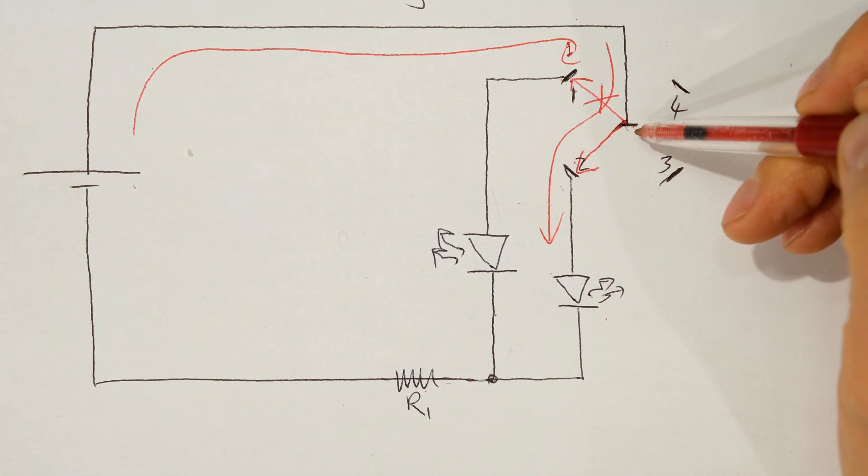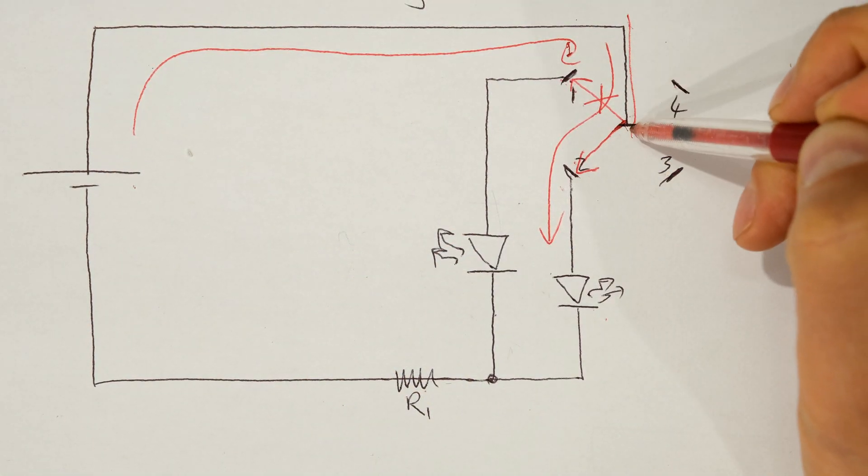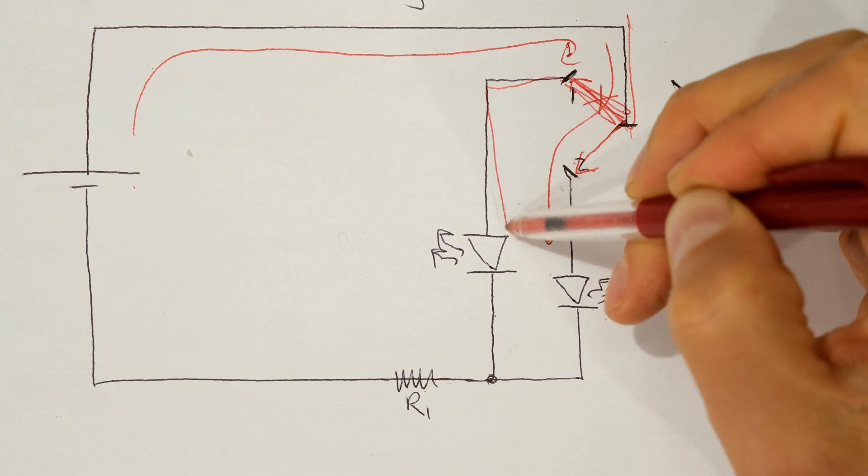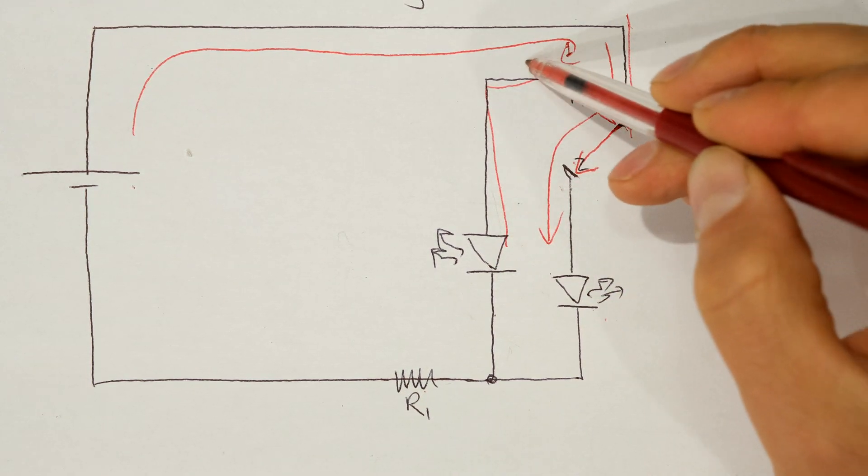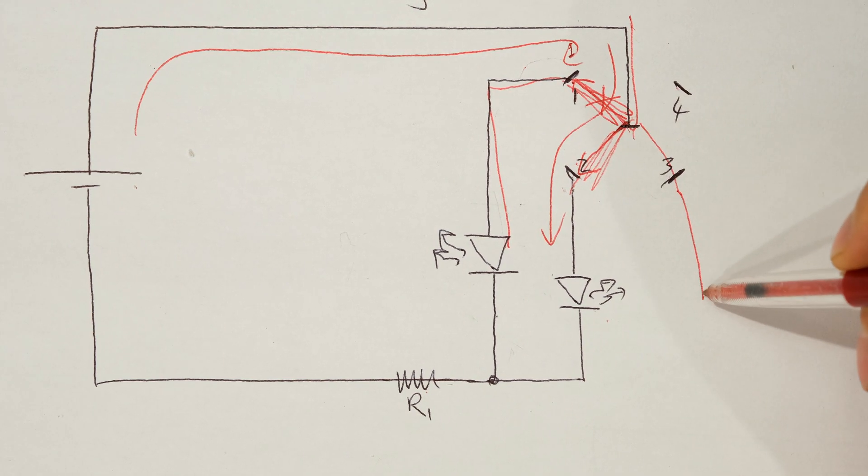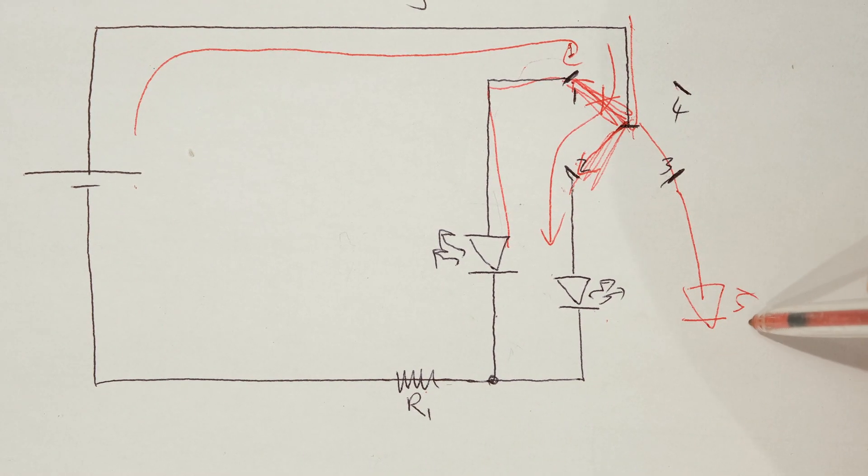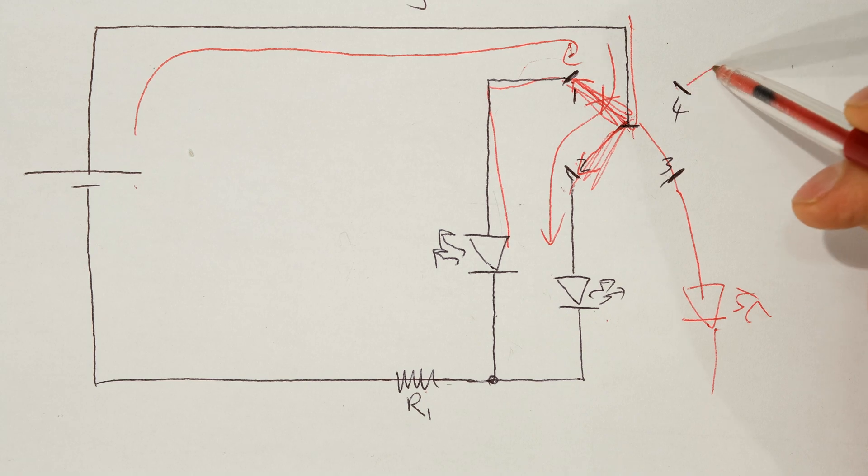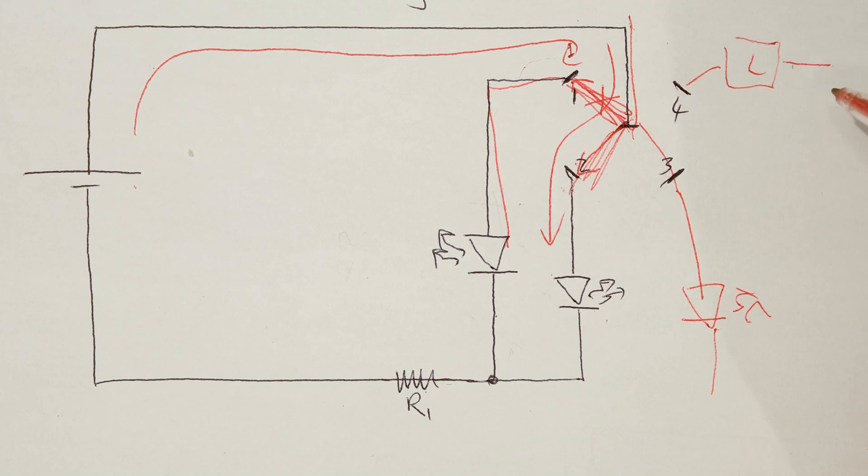So this is the function of the rotary switch. It allows me to choose which circuit I want the current to flow—either the first circuit or the second, or maybe the third if there was another LED here. And they don't only have to be LEDs; it can be any type of load that you've selected.